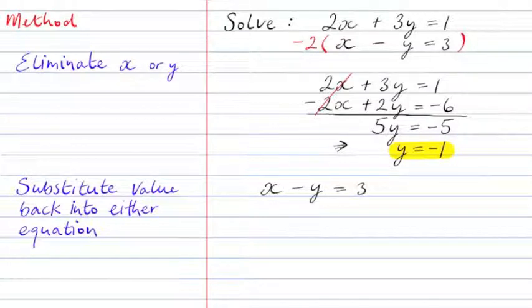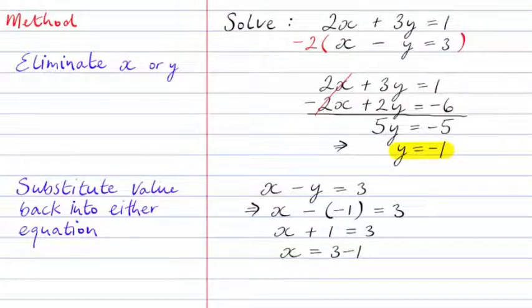If x minus y equals 3, but y has the value minus 1, then we write x minus minus 1 equals 3. Minus minus 1 is plus 1. And if we subtract 1 from both sides, we see that x equals 2.